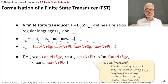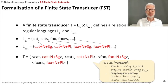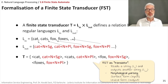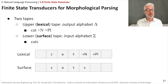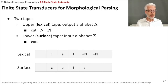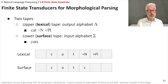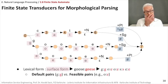The finite state transducer acts as a translator: it reads a string in the input language and outputs another string in the output language. For morphological parsing, we read in the surface form and output the lexical form — at least in theory, as there are more problems to solve. We have two tapes: the upper lexical tape with output alphabet delta, and the lower surface tape with input alphabet sigma. On sigma we have 'cats', and on the output tape we want 'cat+N+PL'.